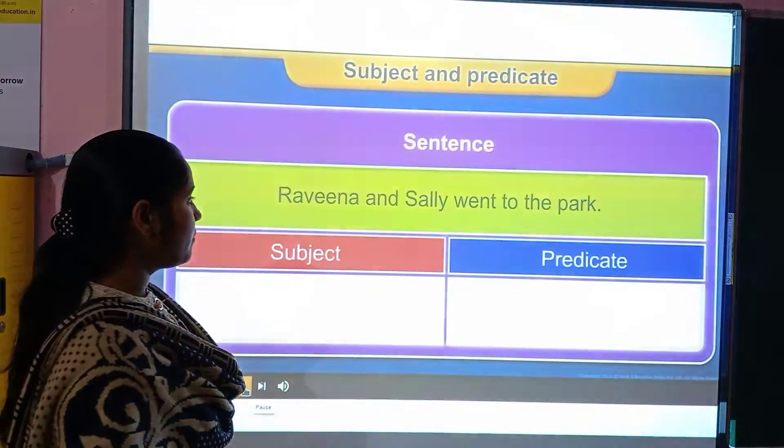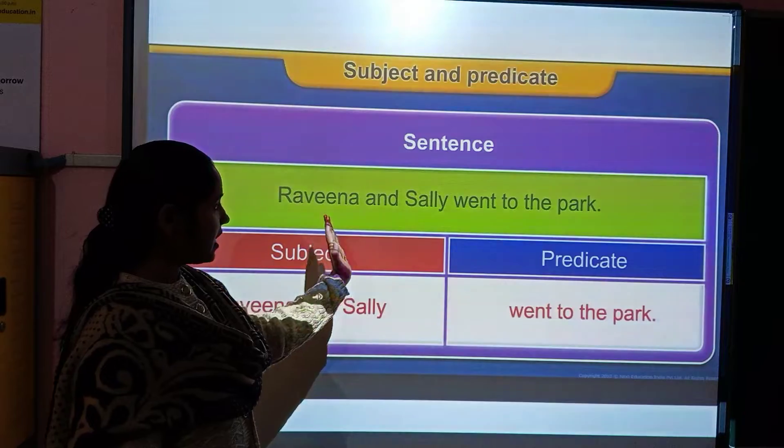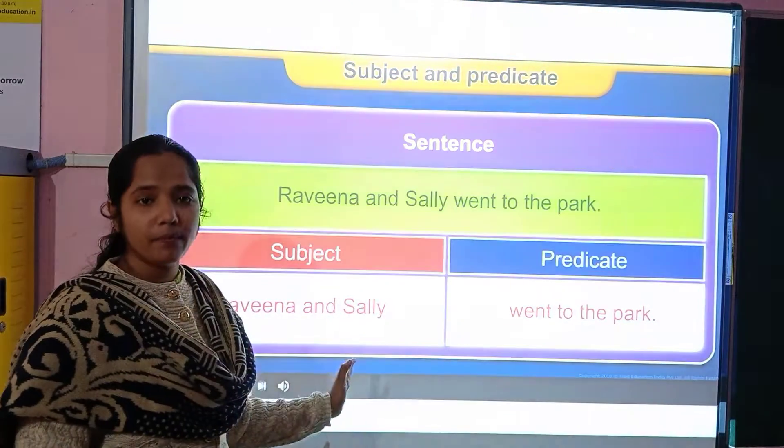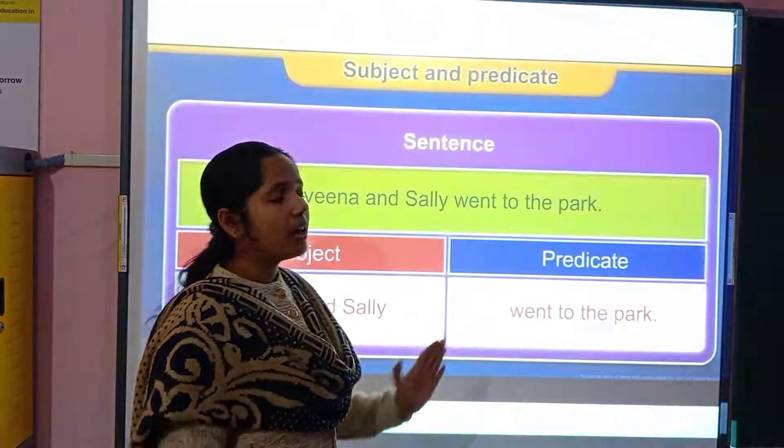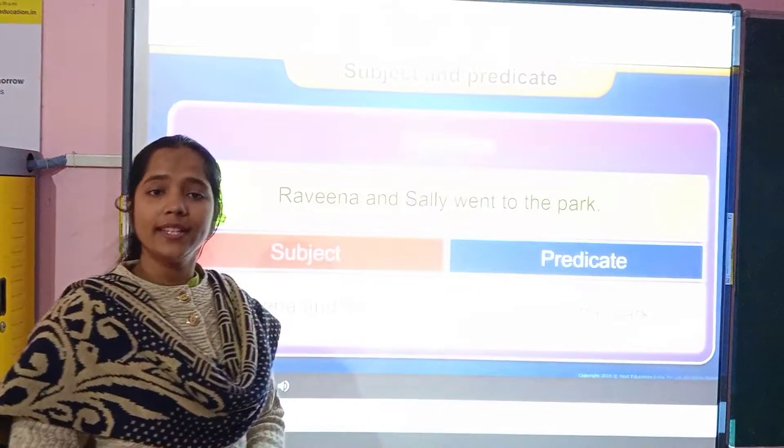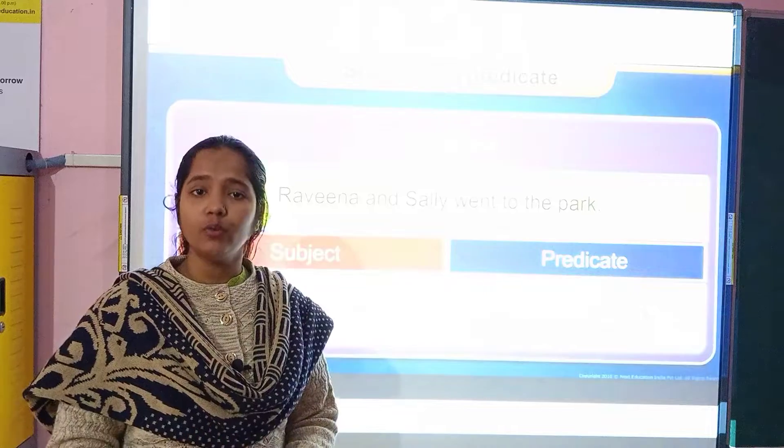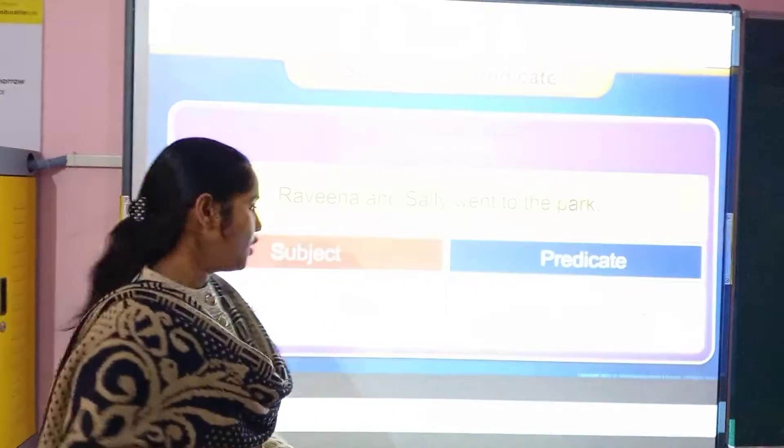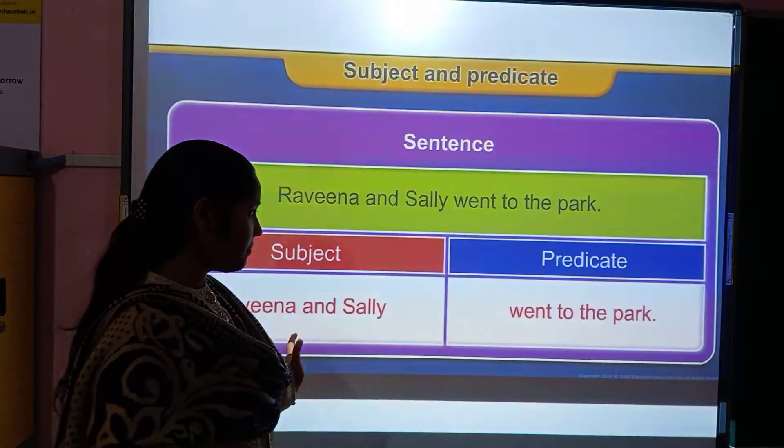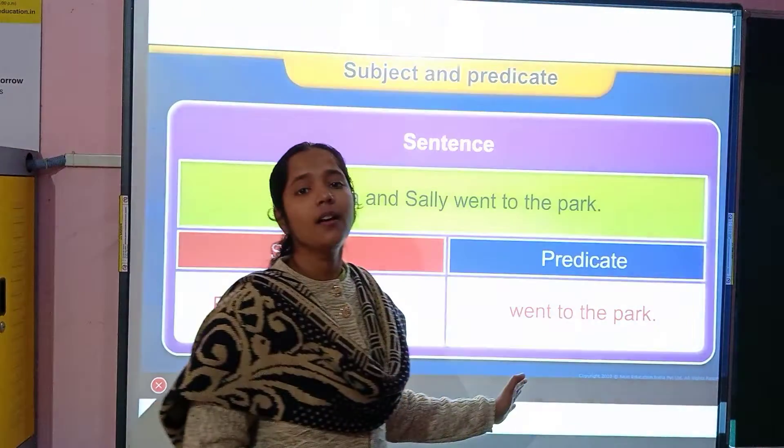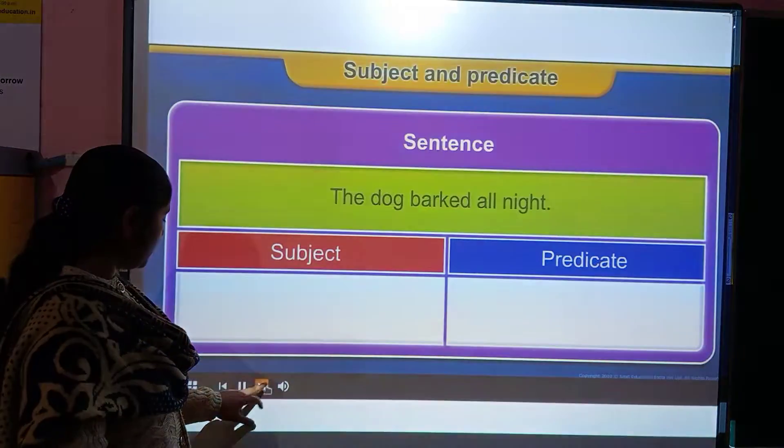So as I told you, first the sentence: Raveena and Sally, they are the name of the person. And went to the park, they are going. So in subject, I taught you that about what and who we are talking, that is the subject. So Raveena and Sally is the subject, went to the park is the predicate. So moving onwards,